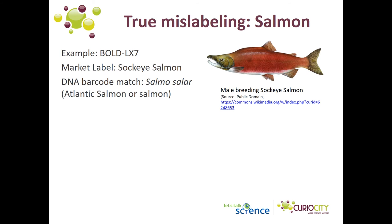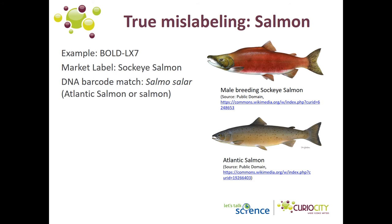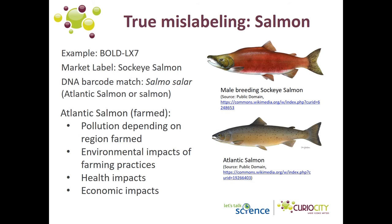Let's look at an example of true mislabeling. In this case, the market name was sockeye salmon, but the DNA barcode identified the species as Salmo salar, known by the common name of Atlantic salmon. Atlantic salmon and sockeye salmon are two different species. Atlantic salmon are often farm-raised, and farm-raised fish can have potential environmental, human health, and economic impacts. Given the public perception and market prices of farm-raised versus wild fish, the mislabeling in this case may have been intentional.